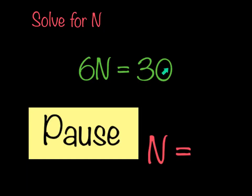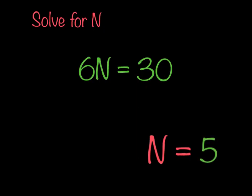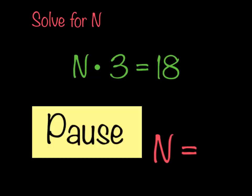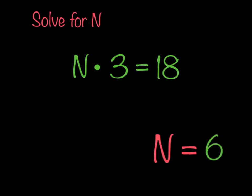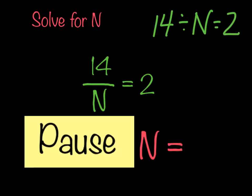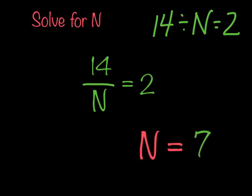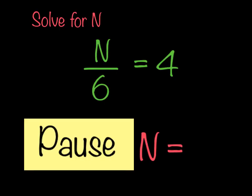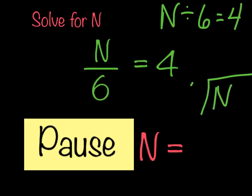Now let's move on to a couple of problems you can solve on your own. Pause the video and solve. Did you get the answer of 3? Next: 7 minus n equals 3 — hopefully you got 4. Now solve for n in n minus 10 equals 12 — did you get 22? And our final addition or subtraction problem: solve for n in 15 minus n equals 5. Did you get 10?